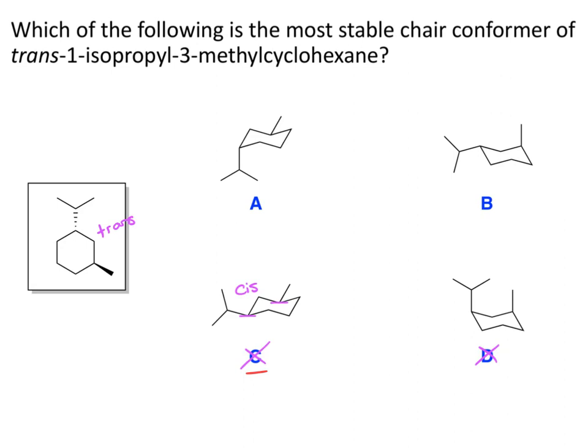So now we just need to compare A and B. If you want to number this, you can — isopropyl to the methyl going clockwise. That works out just fine in both cases. When doing one of these problems, make sure you have the right relationship: isopropyl is at position one, methyl is at position three, and that is the case in both A and B.